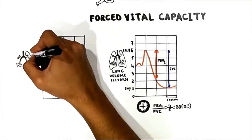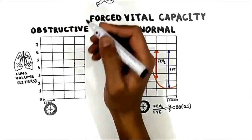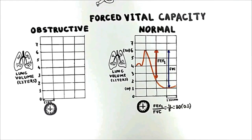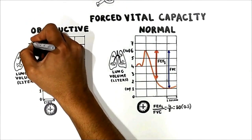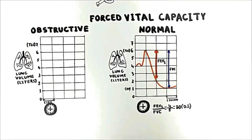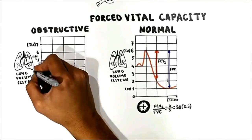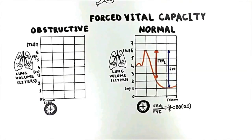In obstructive pulmonary disease, especially emphysema, the lung loses elastic tissue, decreasing recoil force and increasing compliance, so the lung is easily stretched. As a consequence, lung volume increases at FRC. Total lung capacity is normal or larger — maybe 7 liters instead of 6. FRC also increases, suppose 5 liters instead of 4, and residual volume increases to 3 liters. The lung operates at large volumes.